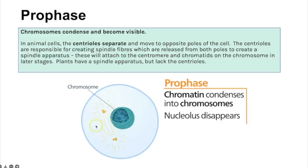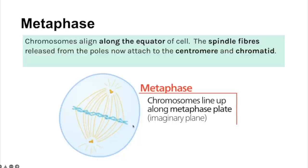In prophase, chromosomes condense and become visible. In animal cells, pairs of centrioles move to opposite poles and produce spindle fibres to create the spindle apparatus. These will attach to the centromere and chromatids in later stages. In metaphase, chromosomes line up in single file along the equator, and spindle fibres from the centrioles attach to the centromere and chromatids.